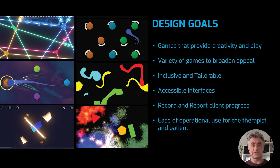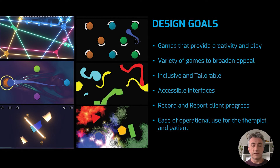Our design process was led by six goals that envisaged the design of an upper-limb rehab system. We wanted to create games for movement rehab that provided opportunity for creativity and play, and offer a variety of games to broaden the appeal to different demographics. We also wanted to make it inclusive and tailor game difficulty to varying physical and cognitive needs, develop accessible user interfaces that reflect how we manipulate objects in the real world, record and report empirical data of clients' progress, and ensure ease of operation for both the therapist and the patient.